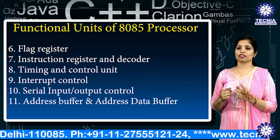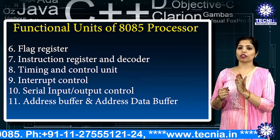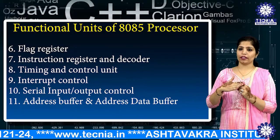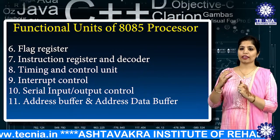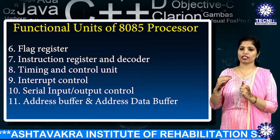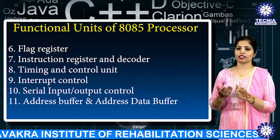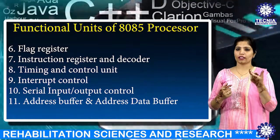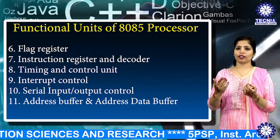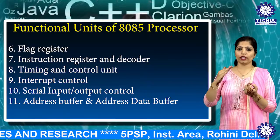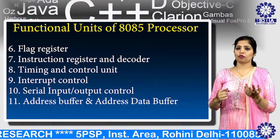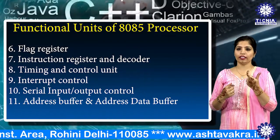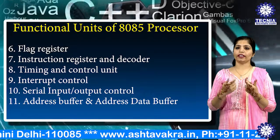The next function is the instruction register and decoder, both 8-bit registers. When an instruction is fetched from memory, it is stored in the instruction register. The instruction decoder decodes the information present in the instruction register. The next function is the timing and control unit, which provides timing and control signals to the microprocessor. The control signals include READY, RD for read, WR for write, and ALE.